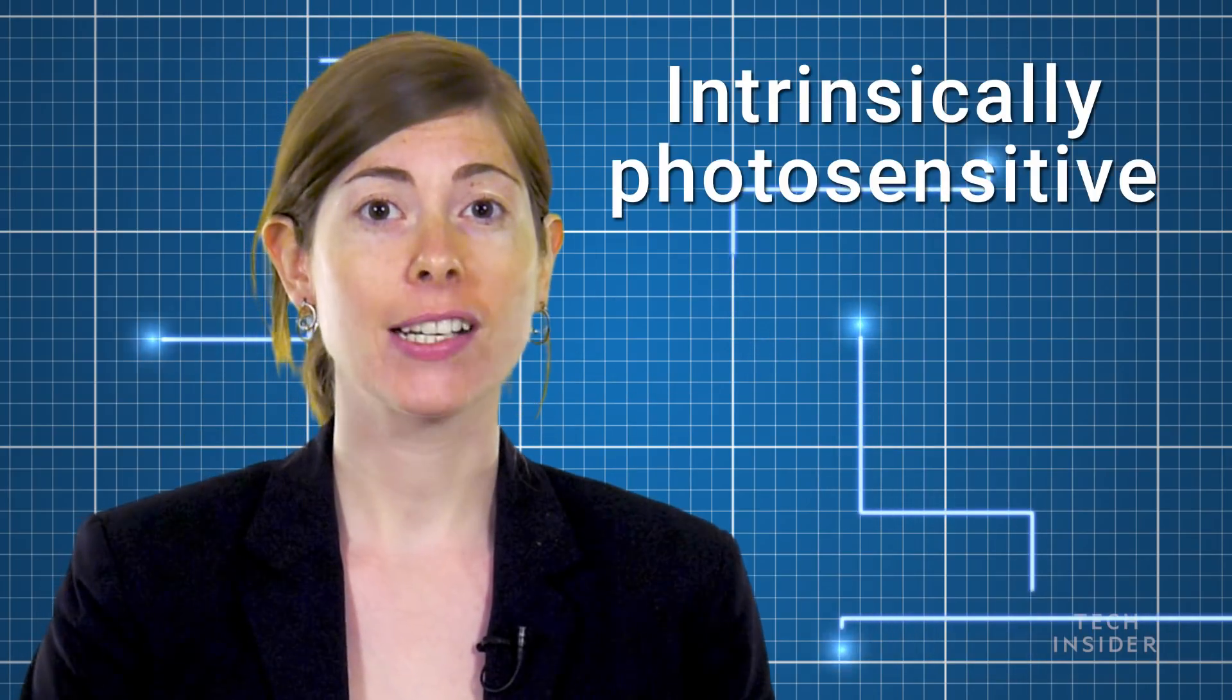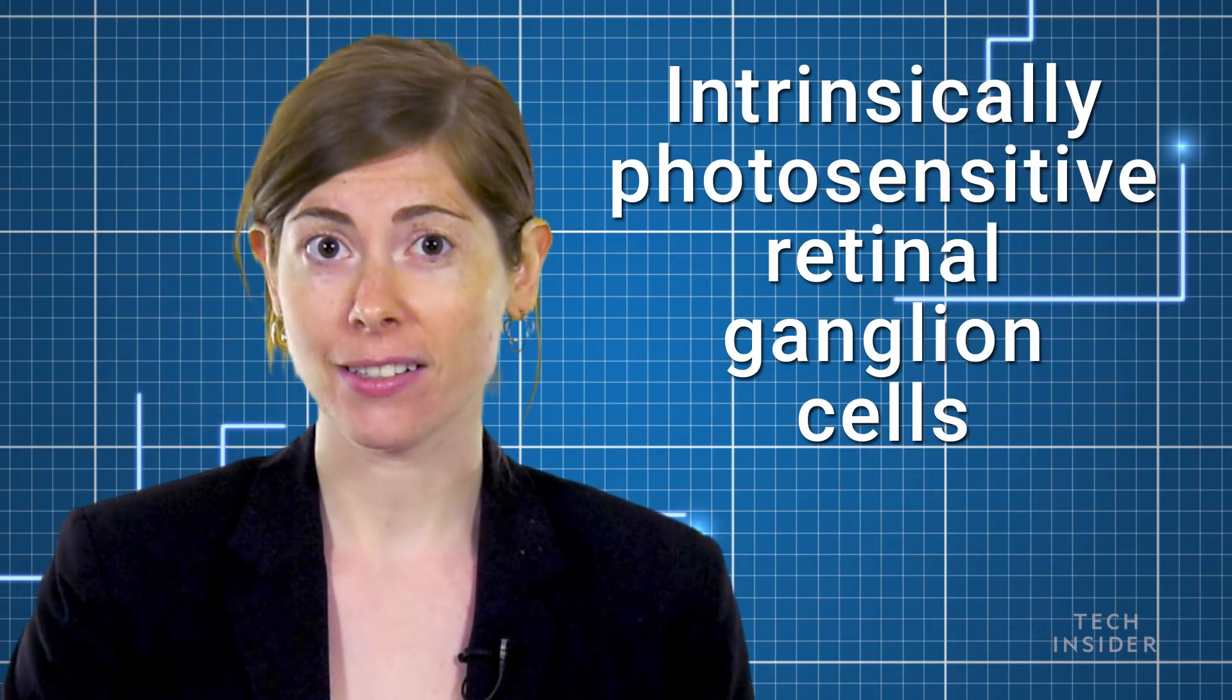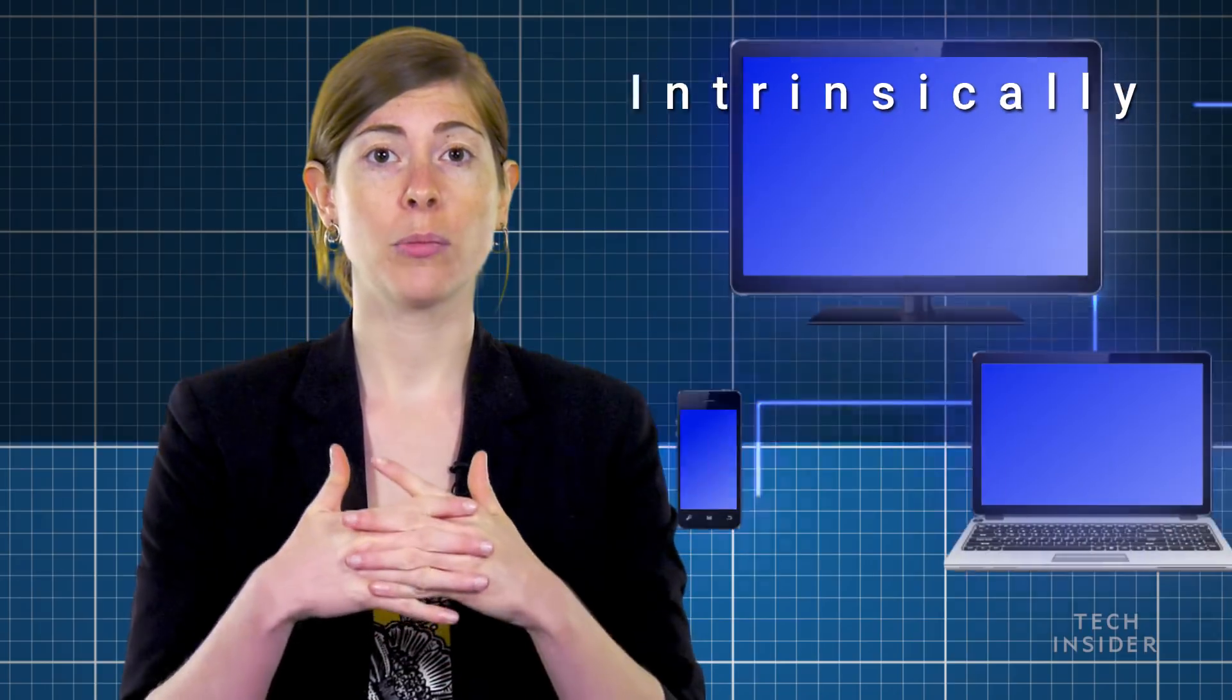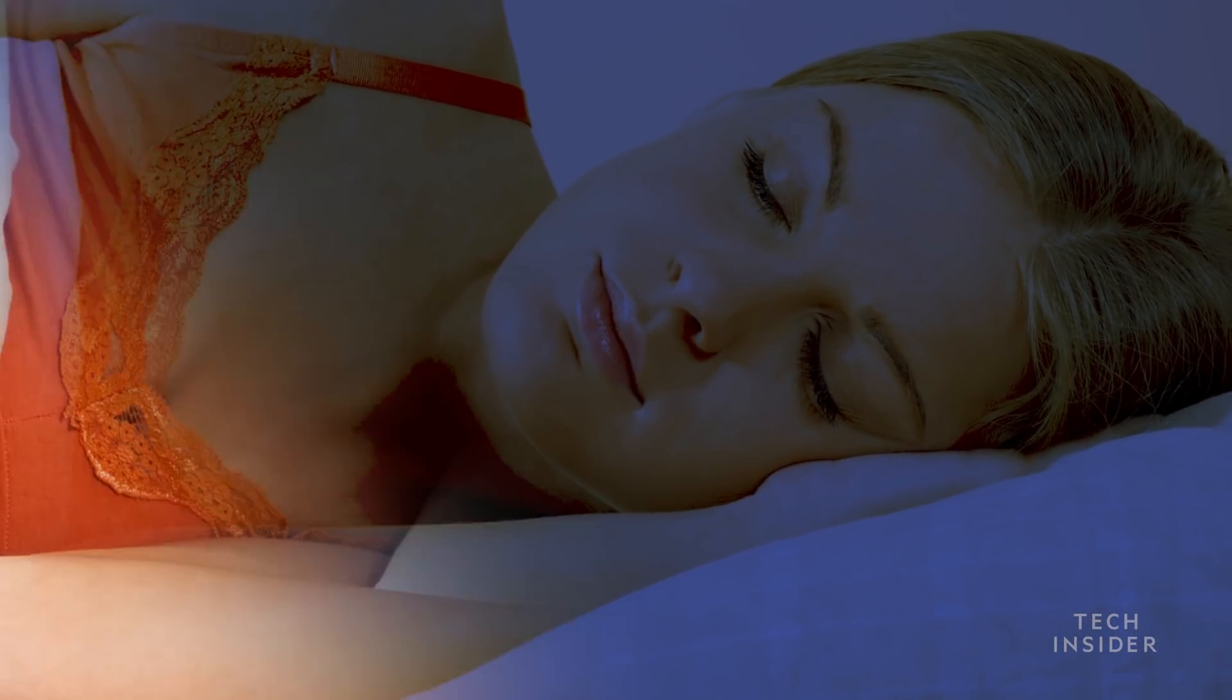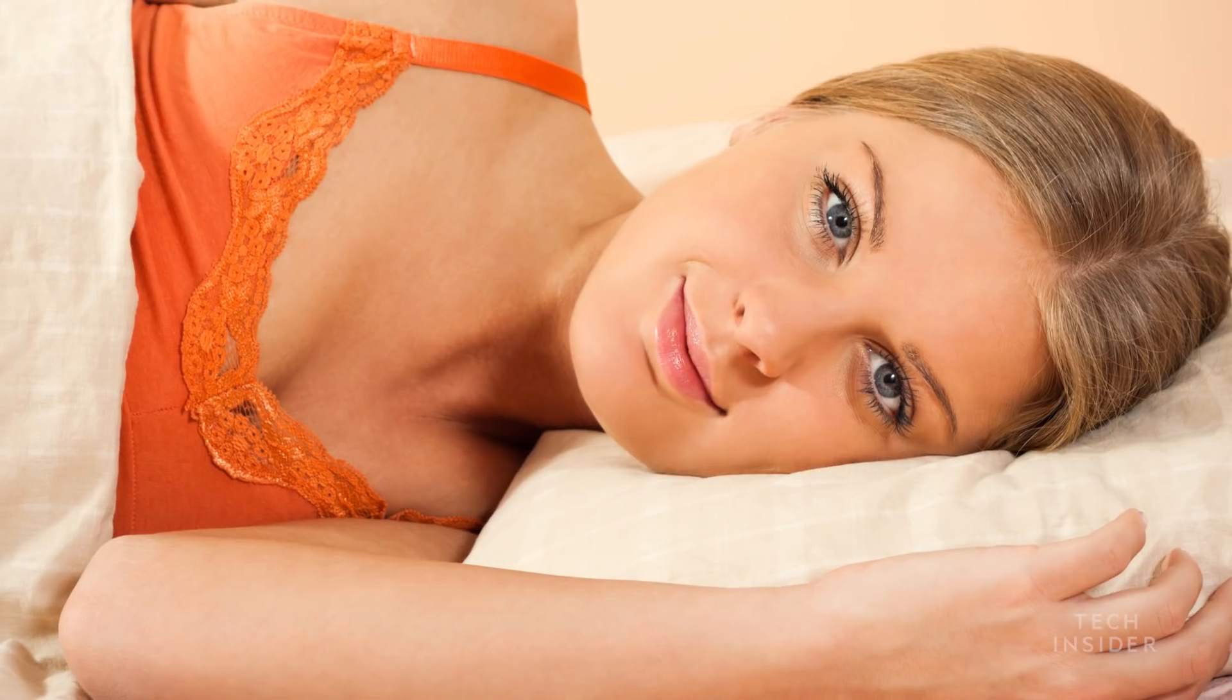Until recently, scientists knew that light affects sleep, but they didn't necessarily know how. And then in 2002, they discovered a different kind of sensor in our eyes called the intrinsically photosensitive retinal ganglion cells. These cells are extremely sensitive to blue light, which could explain why one study found that people who don't have electronic light in their life, their circadian rhythms, their sleep cycles, actually synced up to the rising and setting of the sun.